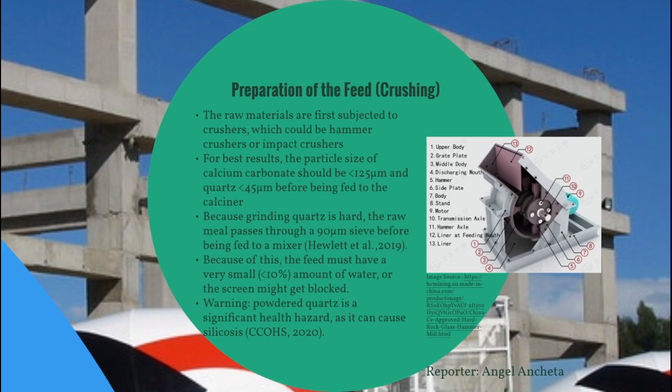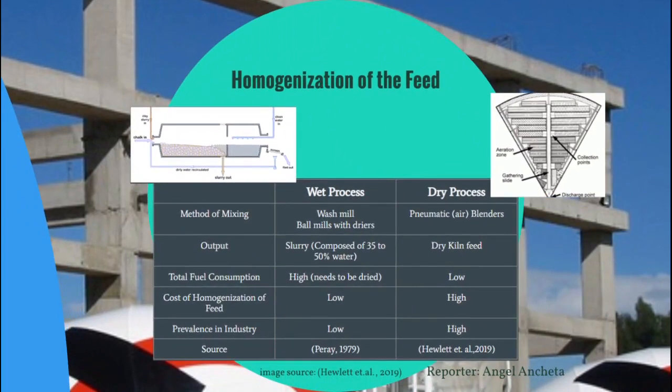After the feed is crushed, it is homogenized using either the wet process or the dry process. The wet process uses a wash mill or ball mill with dryers, with the expected output being a slurry of 35 to 50 percent water. However, total fuel consumption is high as it needs to be dried before going to the preheaters, though the equipment is relatively cheap. The dry process uses pneumatic or air blenders, producing a dry kiln feed with low fuel consumption compared to the wet process, though the equipment is more expensive.